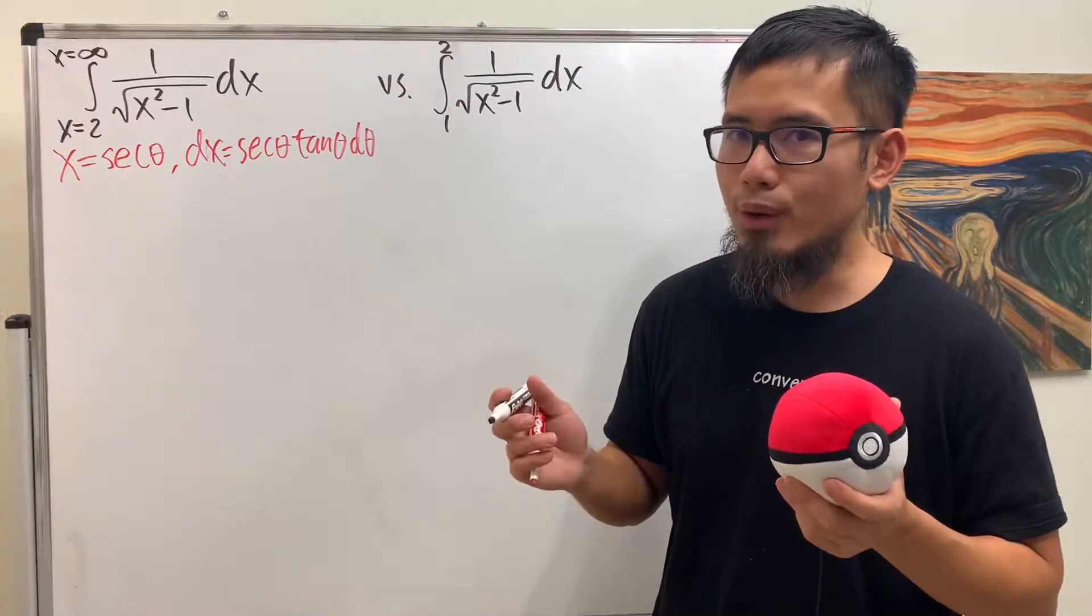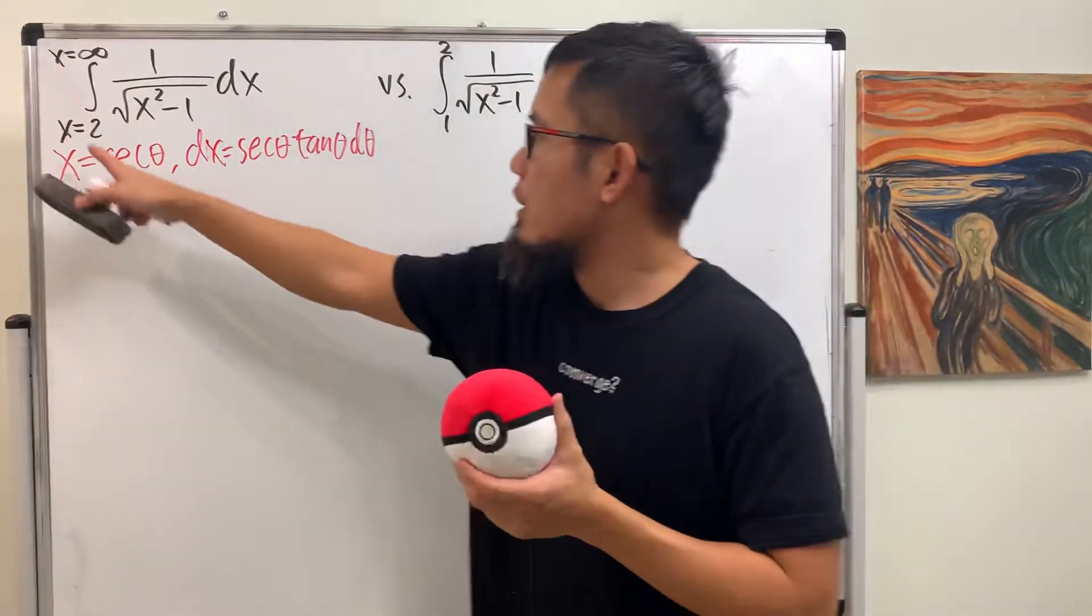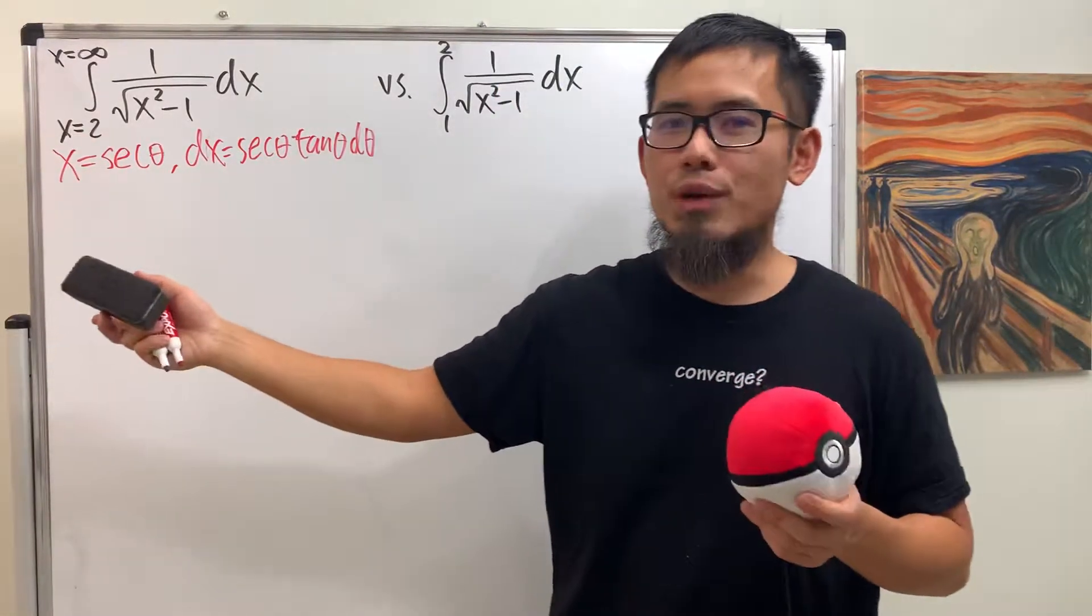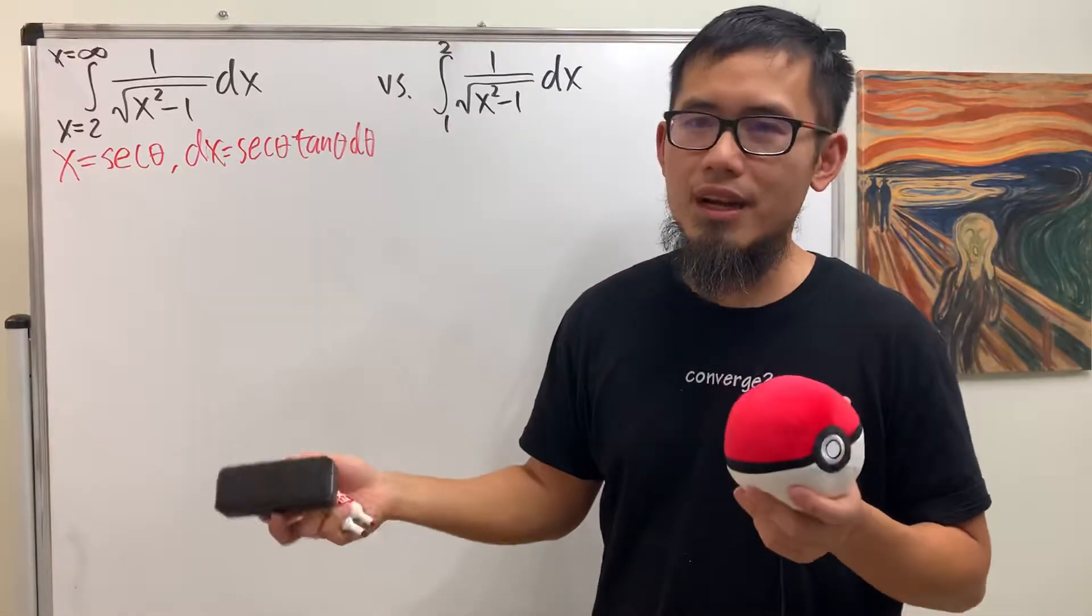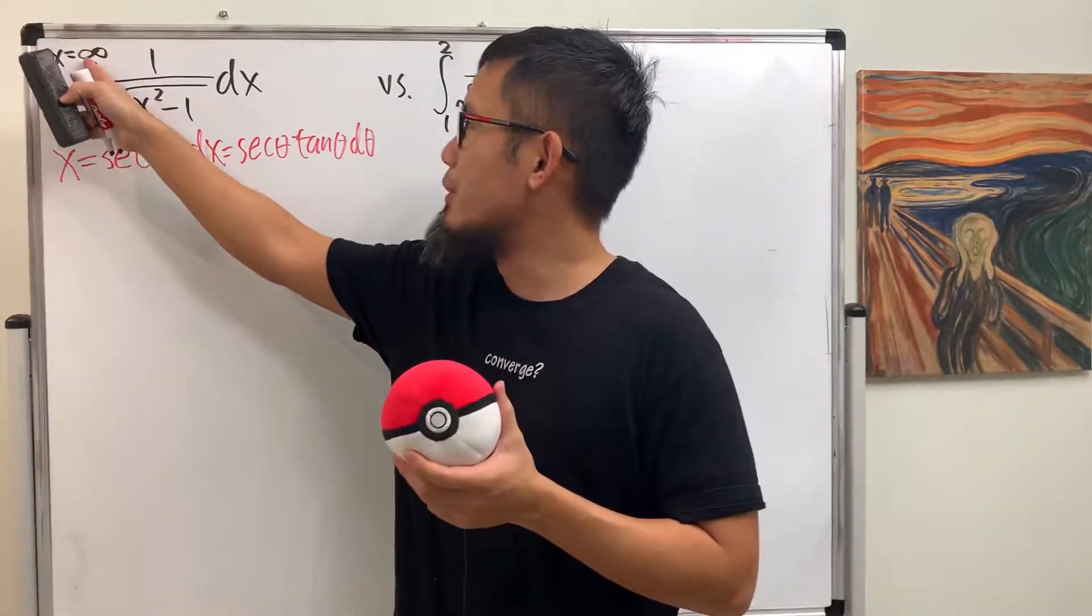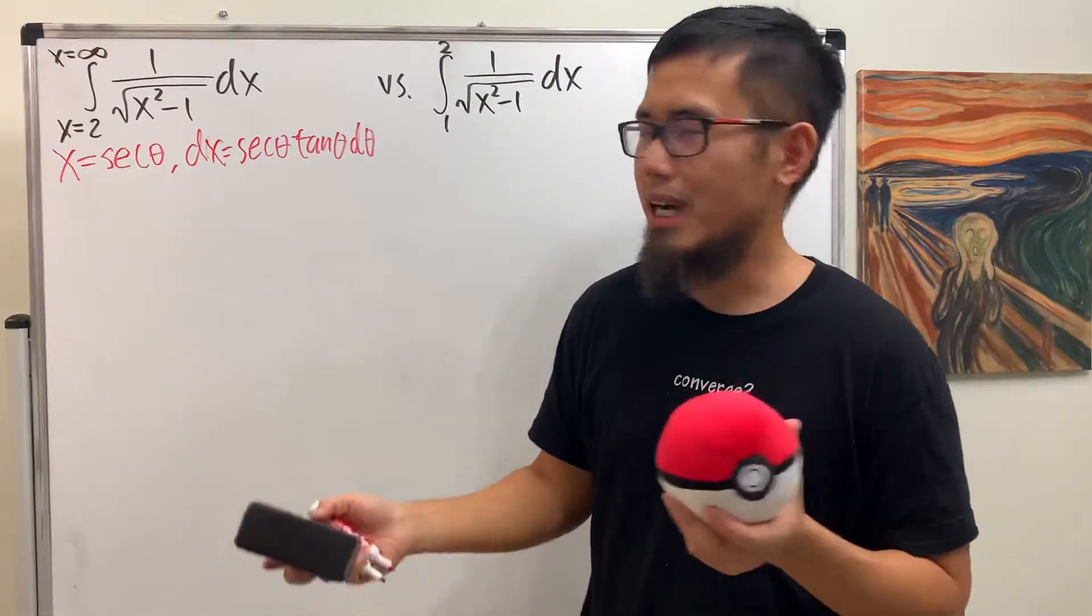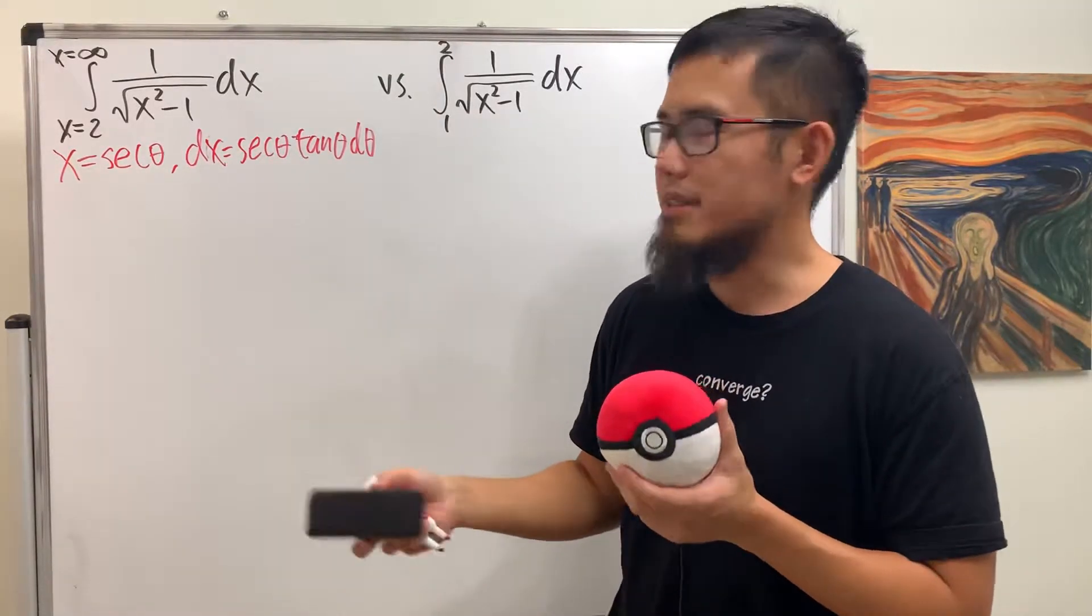But I will not do that, actually, because if you put 2 right here, the first question you get to ask is how do I solve secant theta equals 2? Likewise, if you put infinity right here, you ask how do I solve secant theta equals infinity.